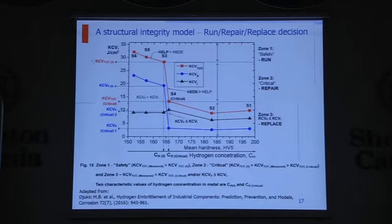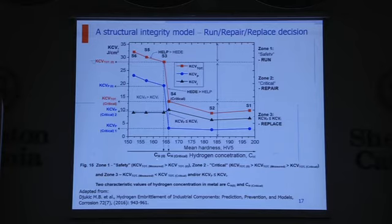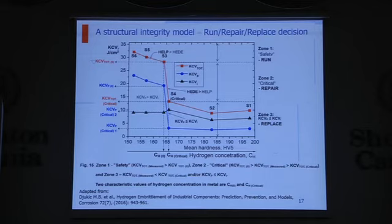Here is the structural integrity model. It is not easy to explain in such a short time, but we have two characteristic regions for hydrogen concentration — the lower hydrogen concentration law, where we have a start of the drop of the micro-mechanical characteristics, specifically impact strength and most importantly the crack propagation component. The initiation component is relatively constant, and we can define the critical hydrogen concentration when we reach the critical drop.